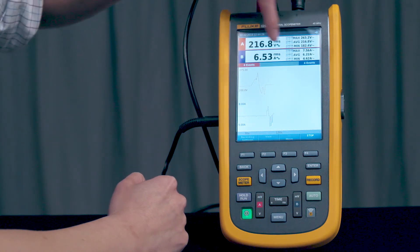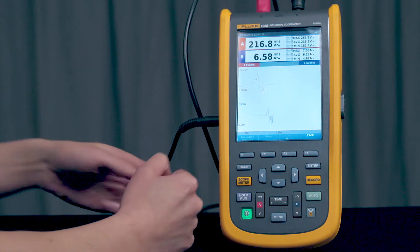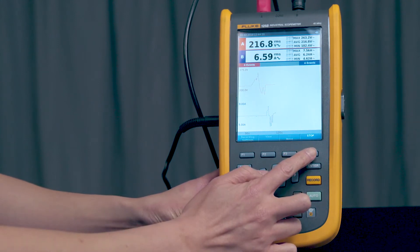And you can see here it's counting up the number of events. And the number of events is just how many times it's gone above or below the upper and lower thresholds. We'll press stop here.